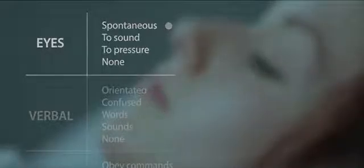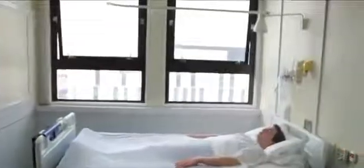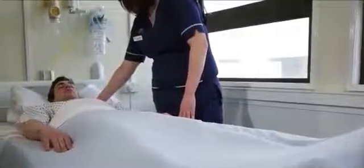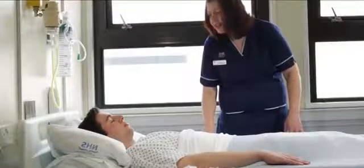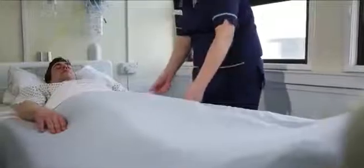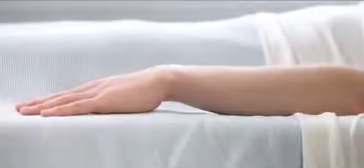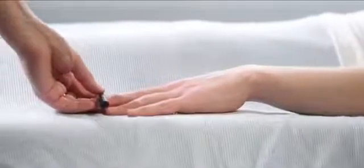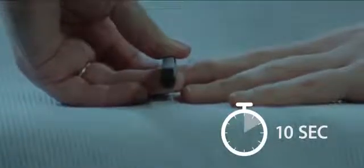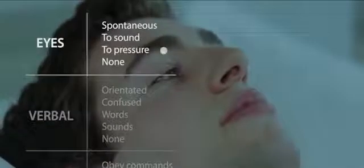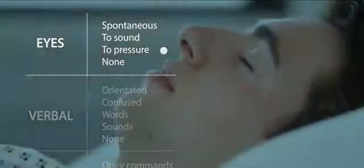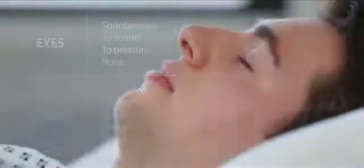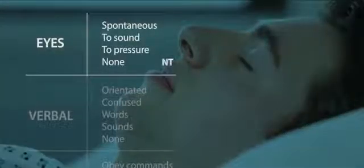Remember, there may be local factors such as swelling that prevent eye opening. If spontaneous opening is not demonstrated, a verbal stimulus is used by introducing yourself clearly and requesting eye opening, if necessary by shouting. If the patient opens their eyes, to sound is recorded. If the patient does not open their eyes when you speak to them, a physical peripheral stimulus is then applied. Stimulation starts at a low level by pressing on the nail tip and is applied with increasing intensity for up to 10 seconds until the patient demonstrates a response or until maximum stimulus has been applied. If the patient opens their eyes, record to pressure. If they do not open their eyes, record as none. If there are local factors such as swelling interfering with eye opening, record eyes not testable.